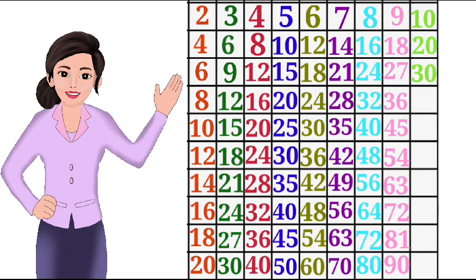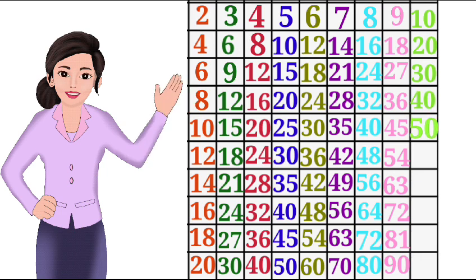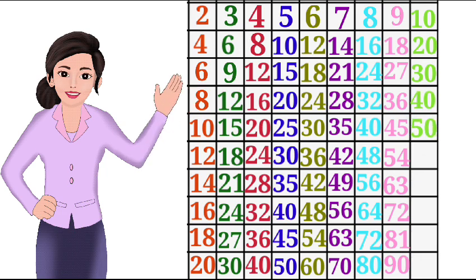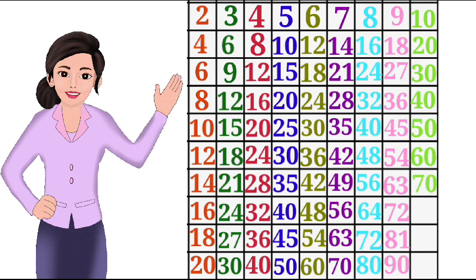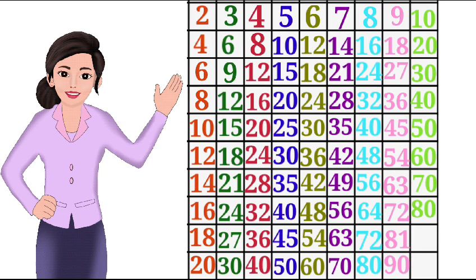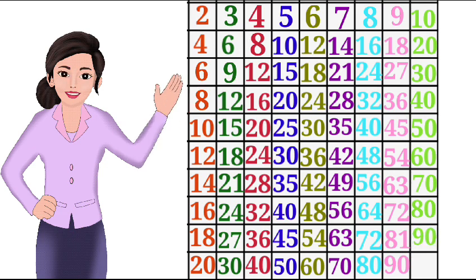10 4s are 40, 10 5s are 50, 10 6s are 60, 10 7s are 70, 10 8s are 80, 10 9s are 90, 10 10s are 100.